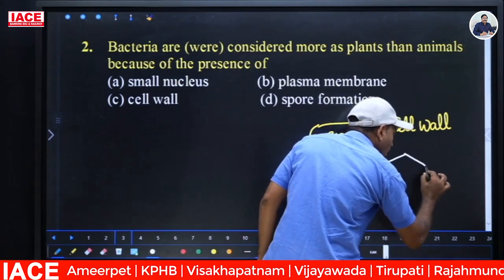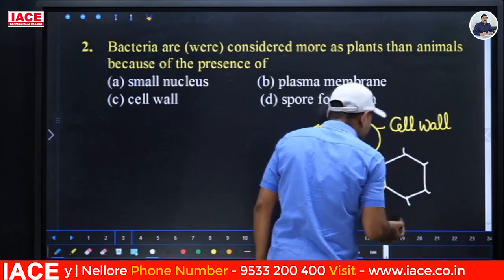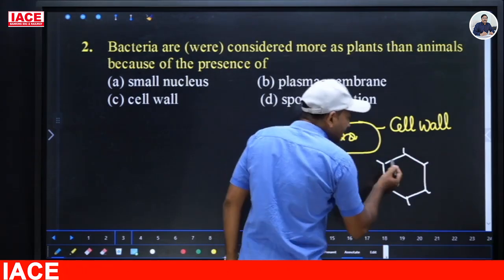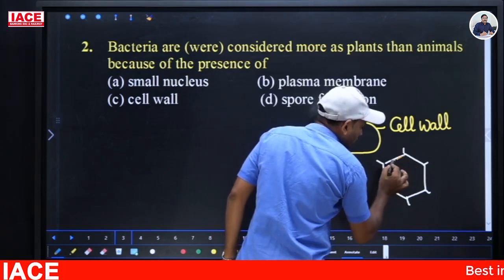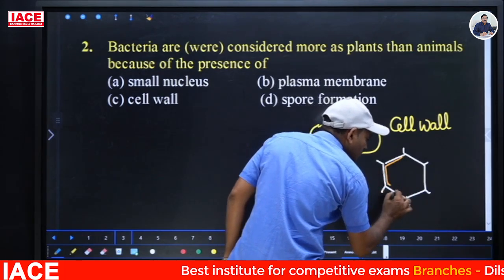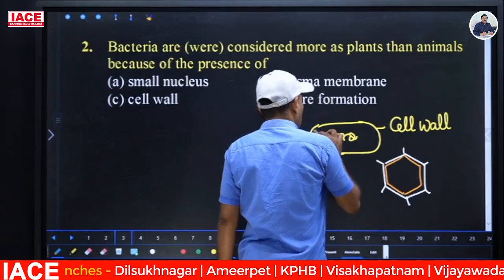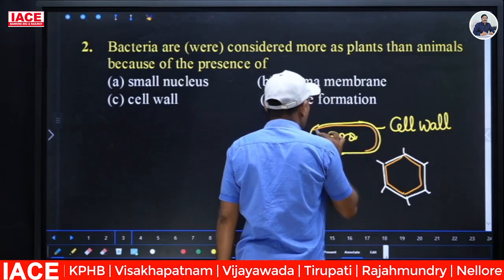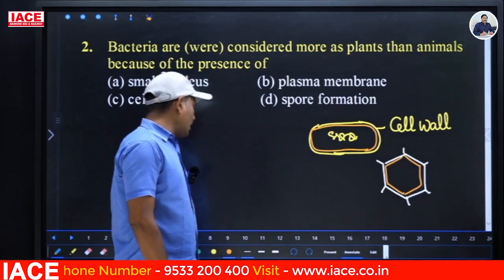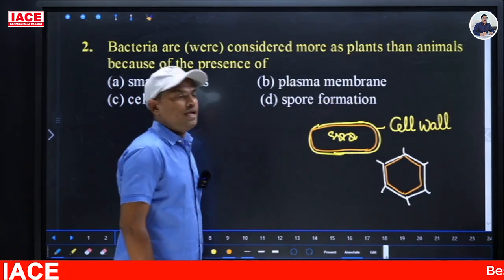In all plant cells, a cell wall is present around the cell. Beneath the cell wall, the outermost membrane of the living cell — the plasma membrane — is also present. Similarly in bacteria, plasma membrane is also present inside the cell wall. The common feature found in bacteria similar to plant cells is the cell wall.